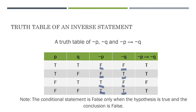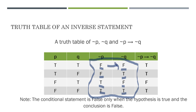I just need to focus on this portion of my table. If both statements are false, then you have true. If the hypothesis is false and the conclusion is true, then that's true. If the hypothesis is true and the conclusion is false, then you have false. And if both statements are true, then you have true. That's your inverse statement truth table.